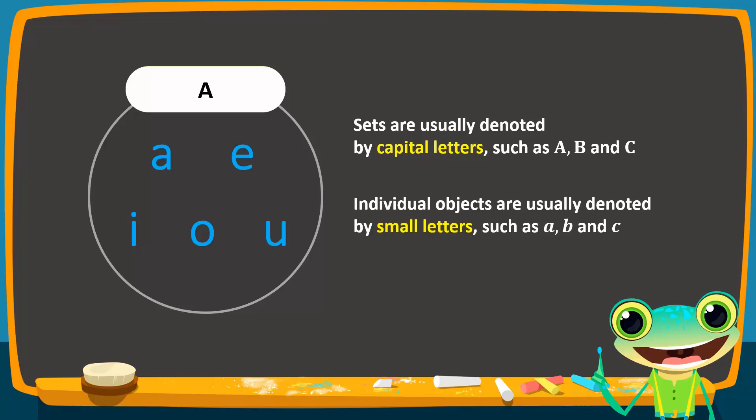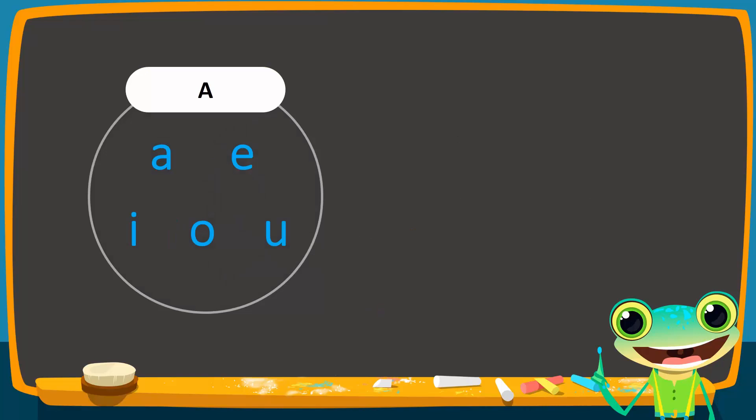Now, the objects of a set have a special name. They are called the elements of the set or the members of the set. Therefore, in this example, we say that set A has five elements. Finally, we want to show the relationship between the set and its elements. To show that an element belongs to a set, we use this symbol, which means 'is a member of' or 'belongs to.' For instance, to show that element e belongs to set A, we write this expression.